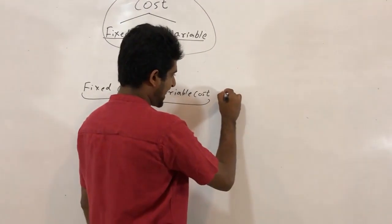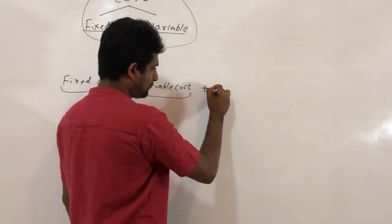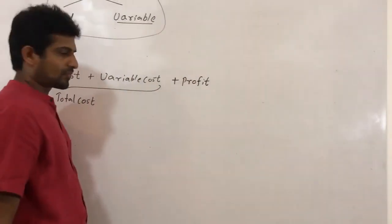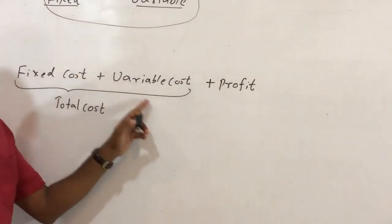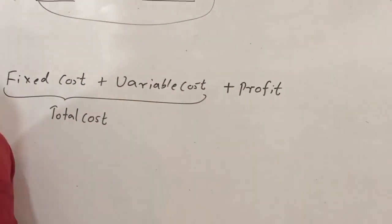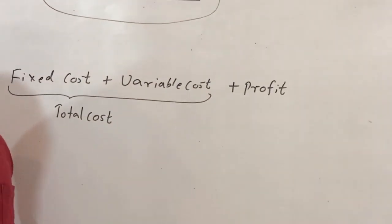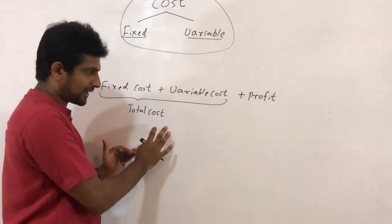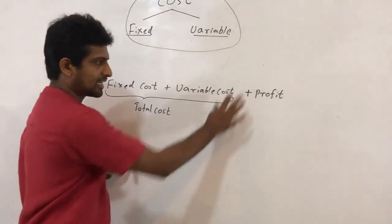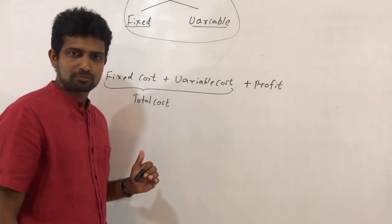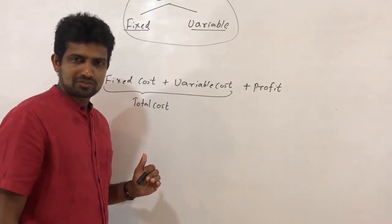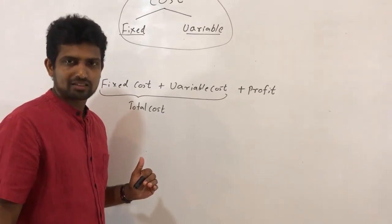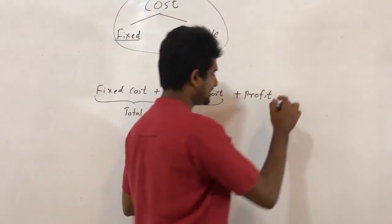If I add profit — fixed cost plus variable cost plus profit — that gives us the total cost, which is the amount spent, plus the amount added for the profit margin. So that should be the selling price, which is sales.